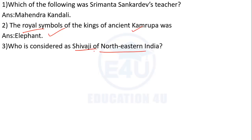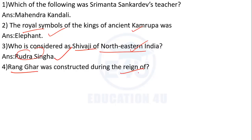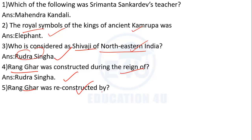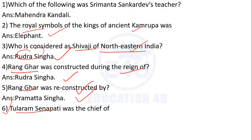Next question: who is considered the father of Assam history, and who reconstructed Pramatta Singh? The answer is Pramatta Singh. Next question: Tularam Shena was the chief of which group? The answer is Dimasa.